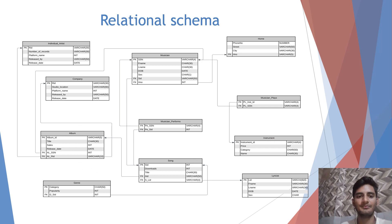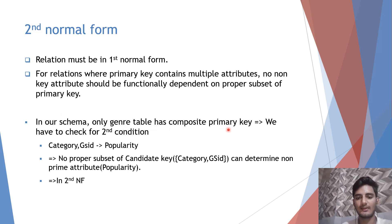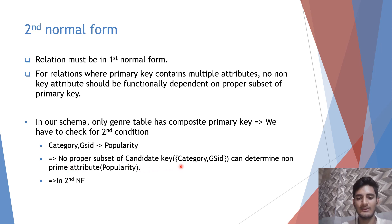Moving towards second normal form: for a relation to be in 2NF, it must be in 1NF, and if a relation has a primary key that contains multiple attributes, no non-key attribute should be functionally dependent on a proper subset of the primary key. In our schema, the genre table has a composite primary key. Checking the second condition: category and gsid together determine popularity, so no proper subset of the candidate key can determine popularity. This implies our table is in second normal form.